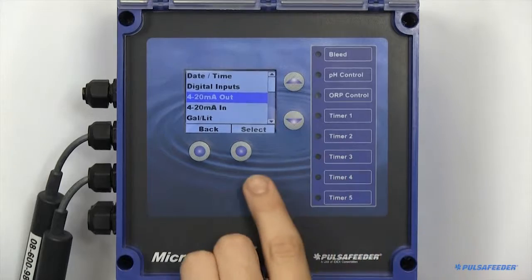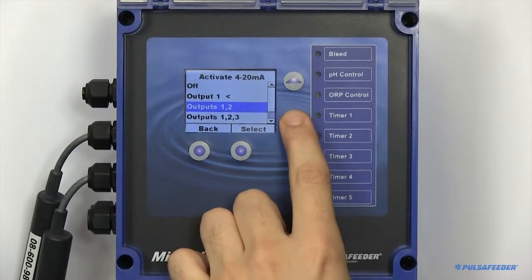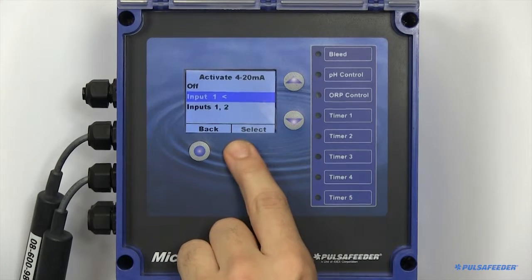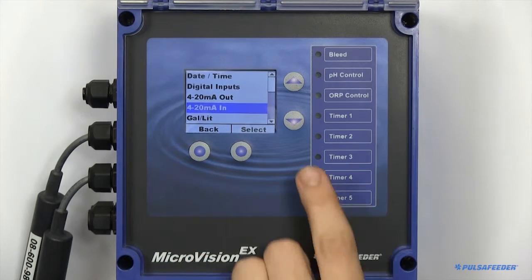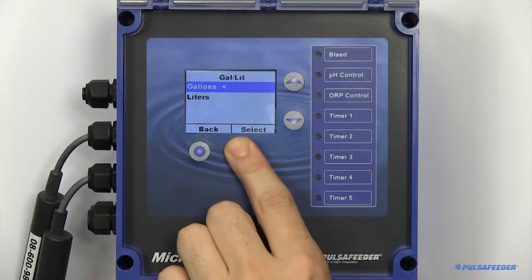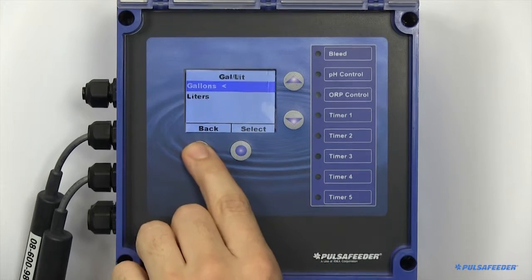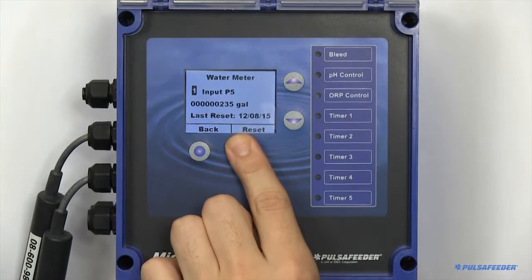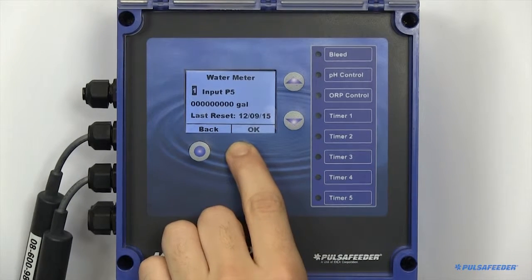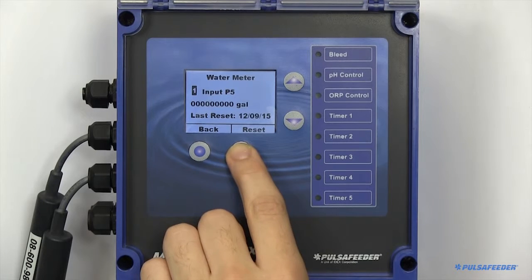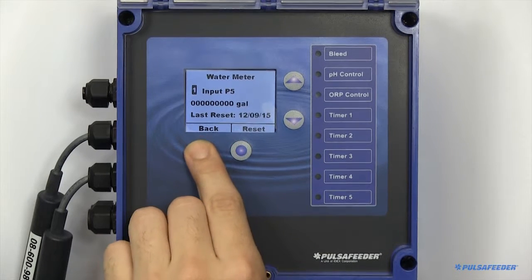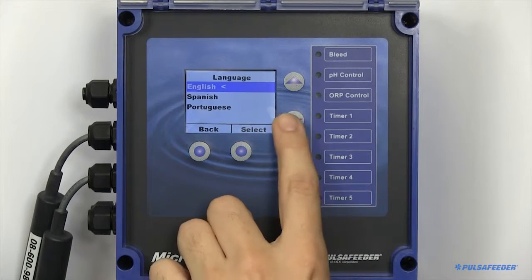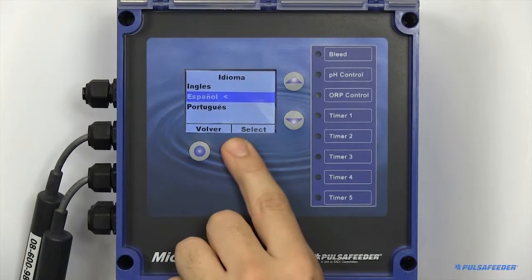The 4-20 milliamp out and input functionalities are enabled and disabled here. The unit can either be configured in gallons or liters. Here is where you can reset any of your water meter values. The unit can support multiple languages. Your language can be selected here.